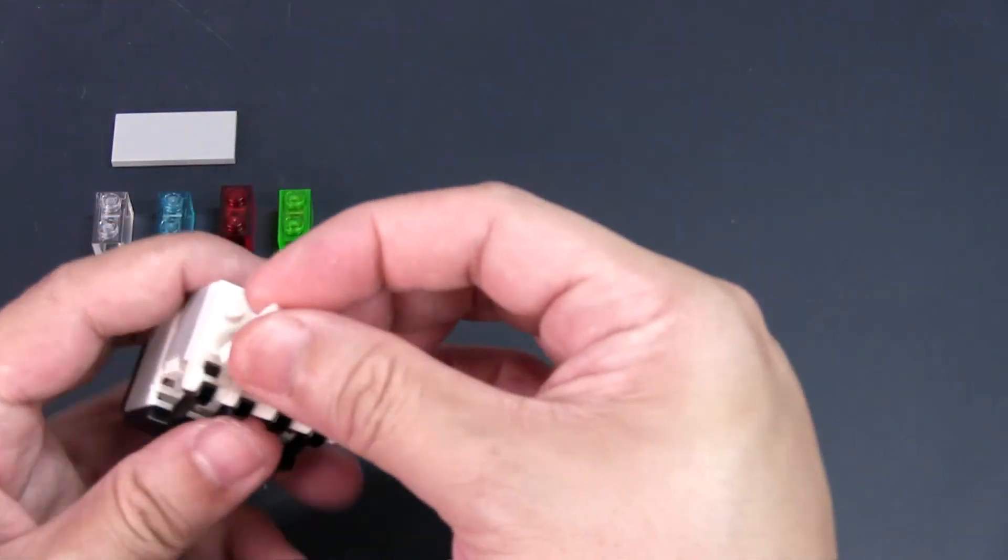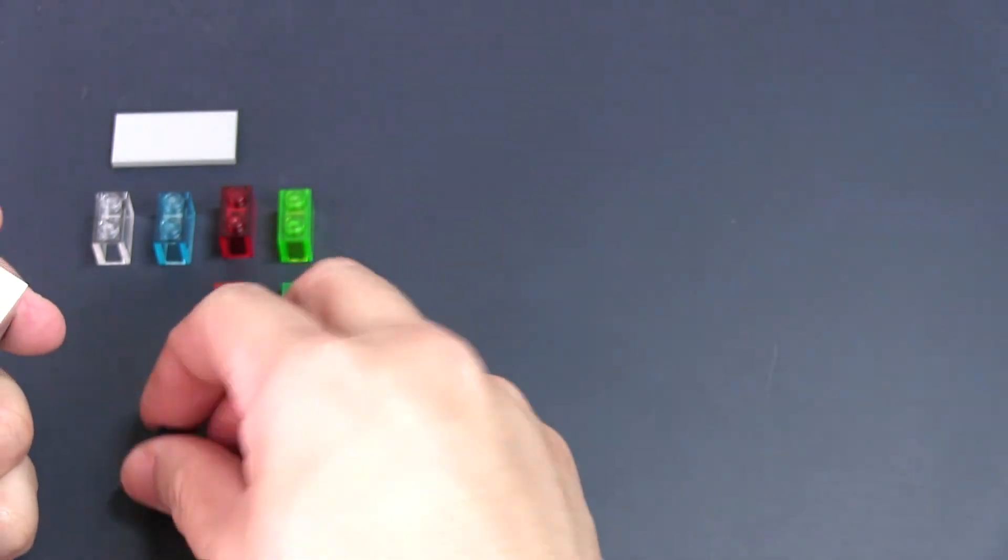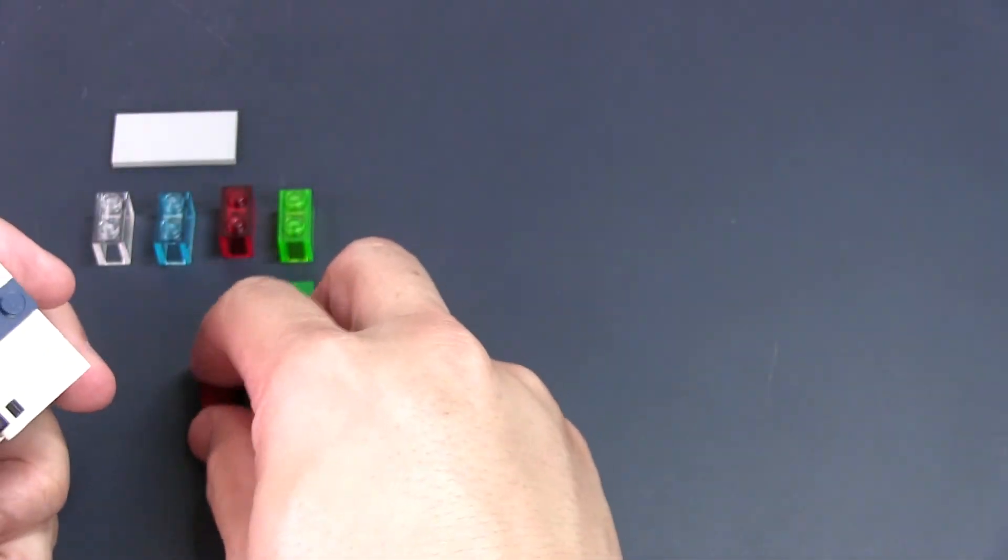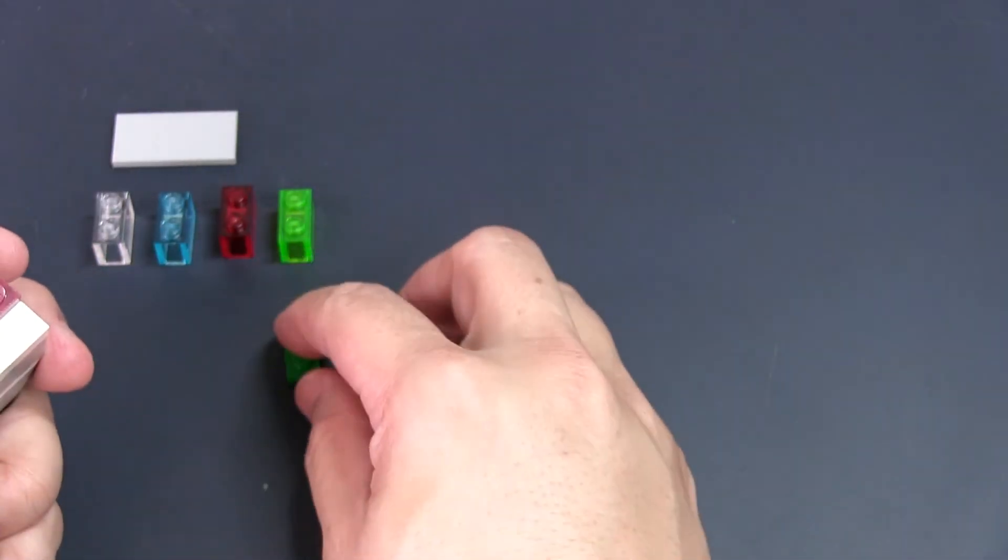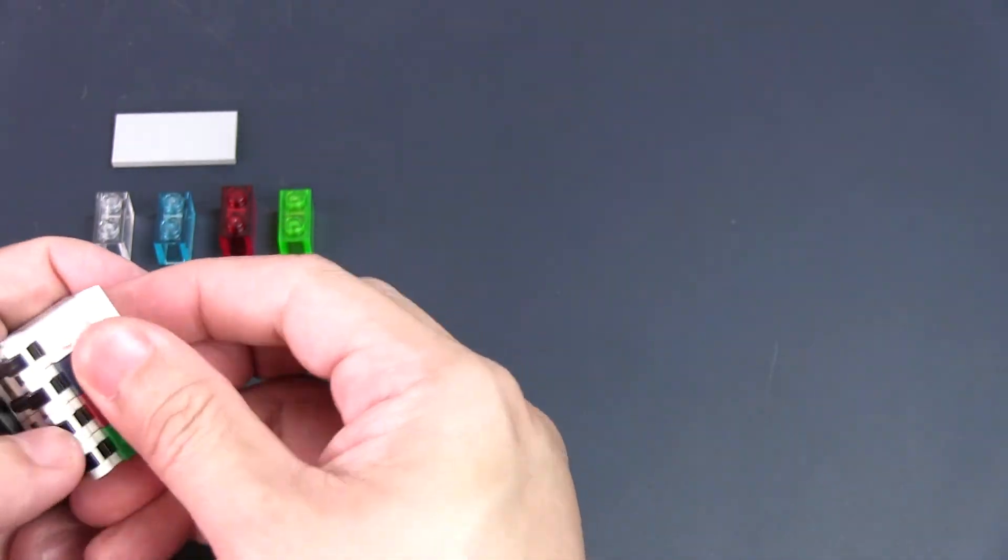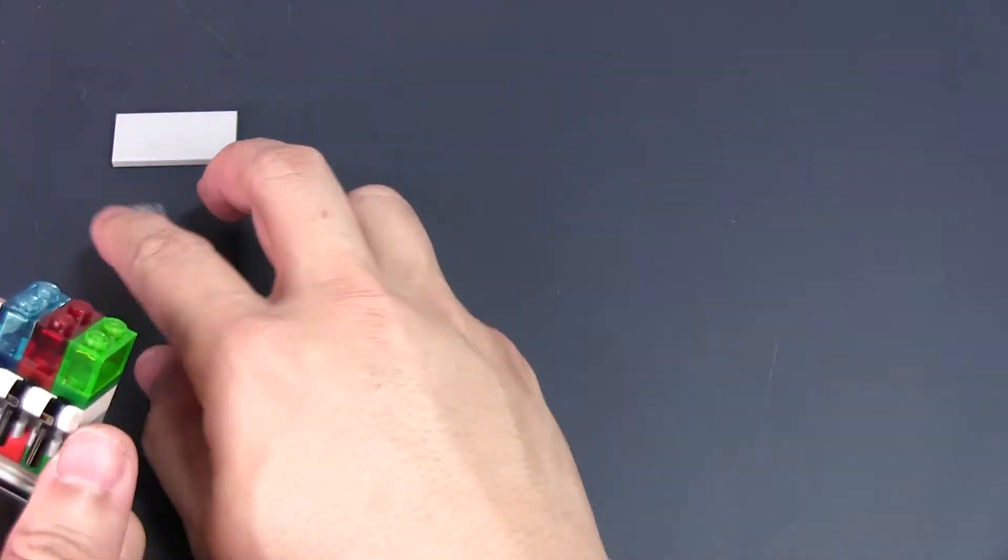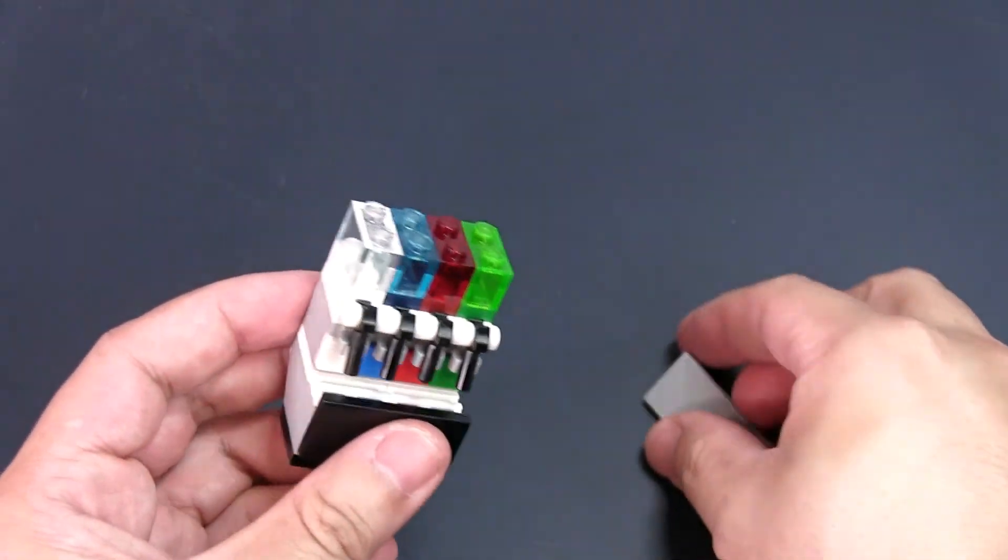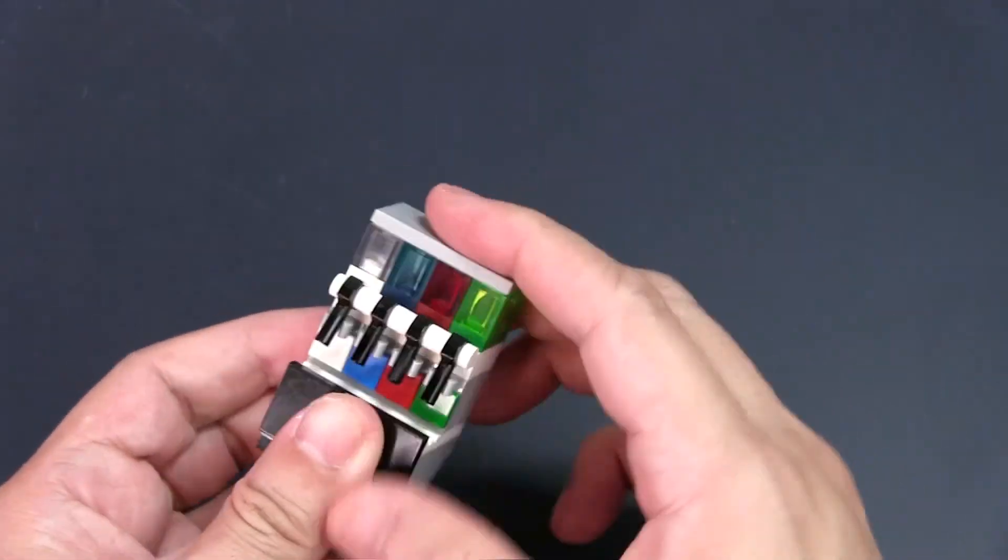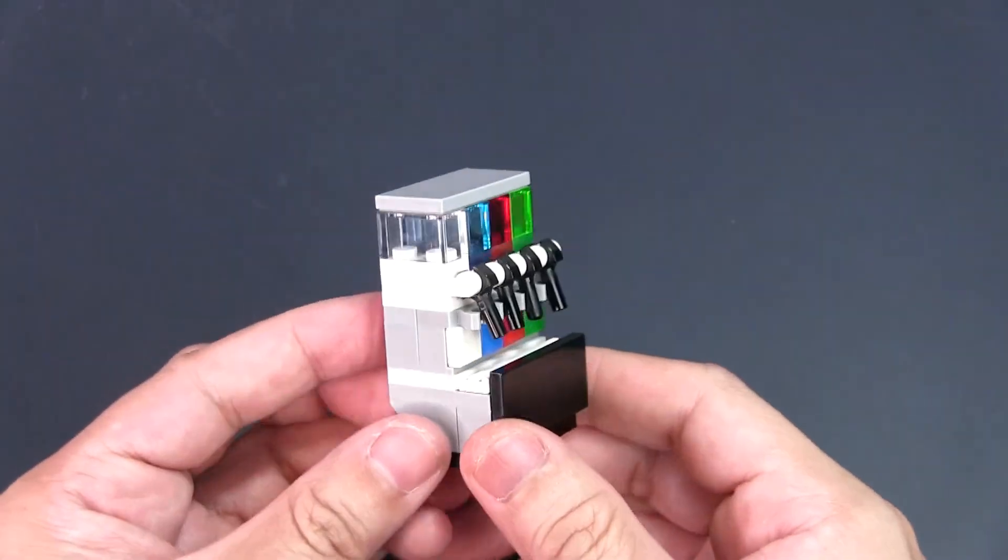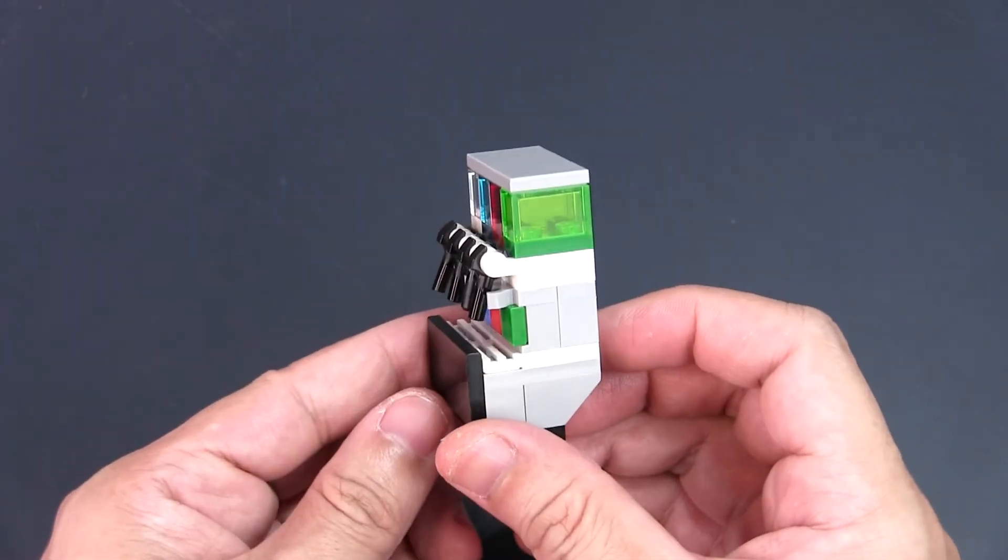To complete the soda fountain, take each of the 1x2 plates and place them on top of the assembled build. Make sure they're in the same order as the colored headlight bricks below. Then take the translucent 1x2 bricks and place them on the corresponding colors. Finally, take the 2x4 tile and cover everything. And there you have your lego soda fountain.